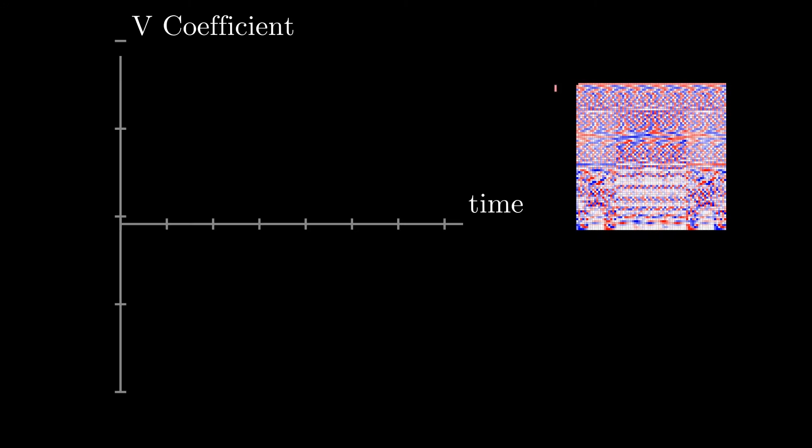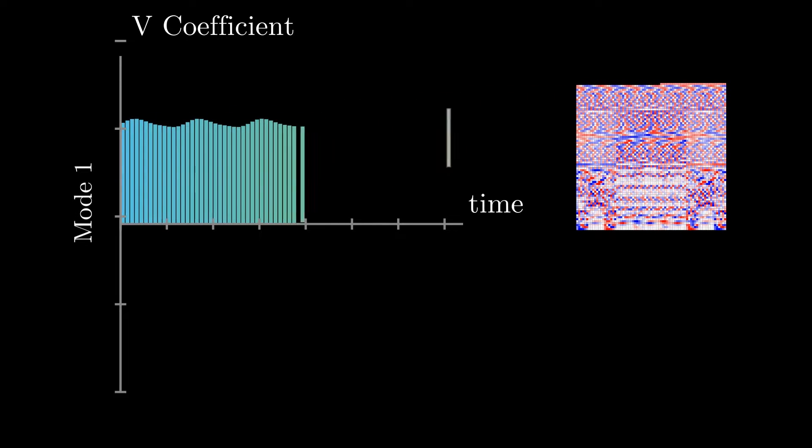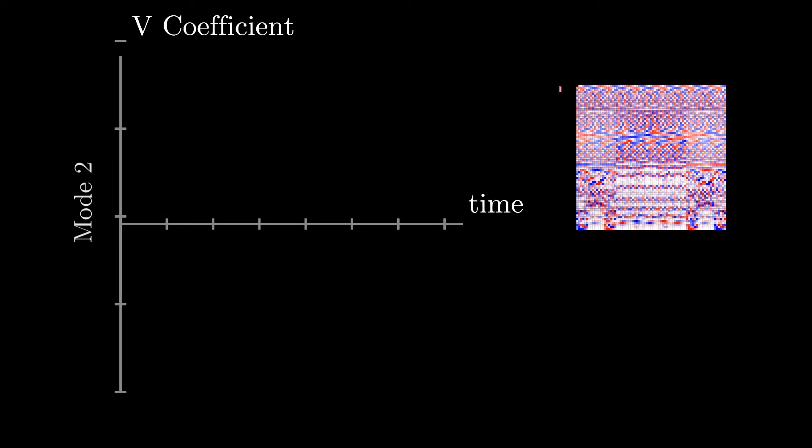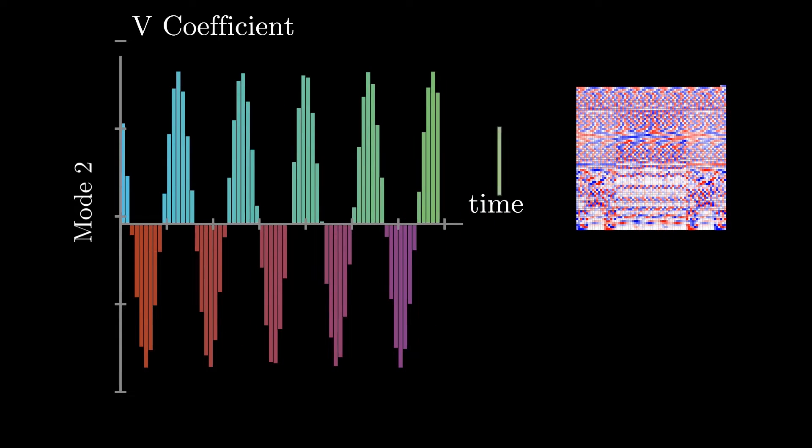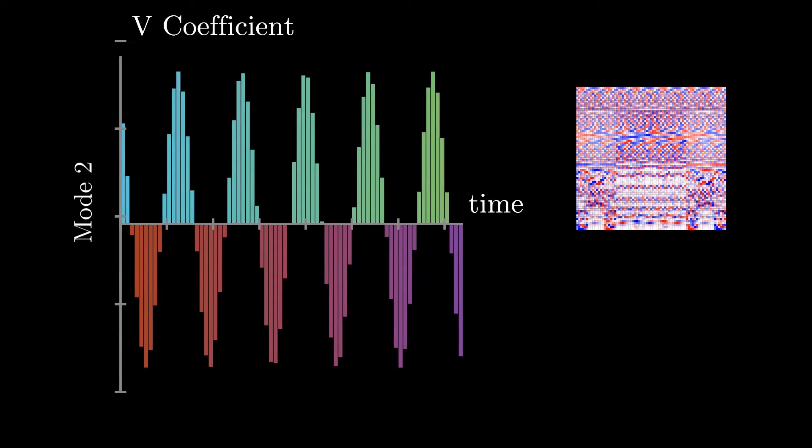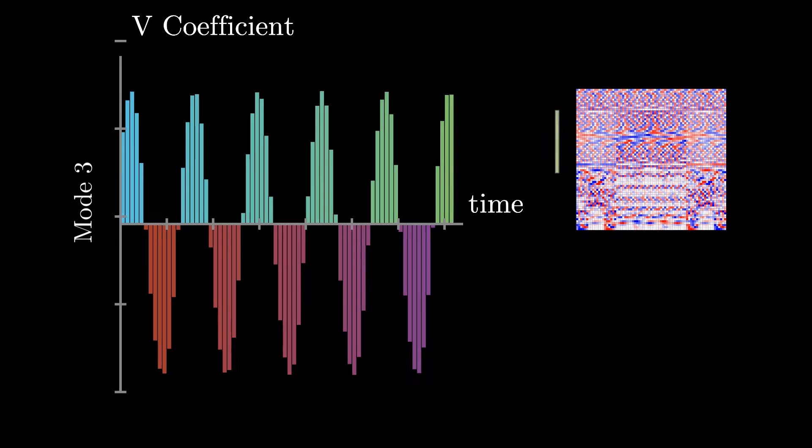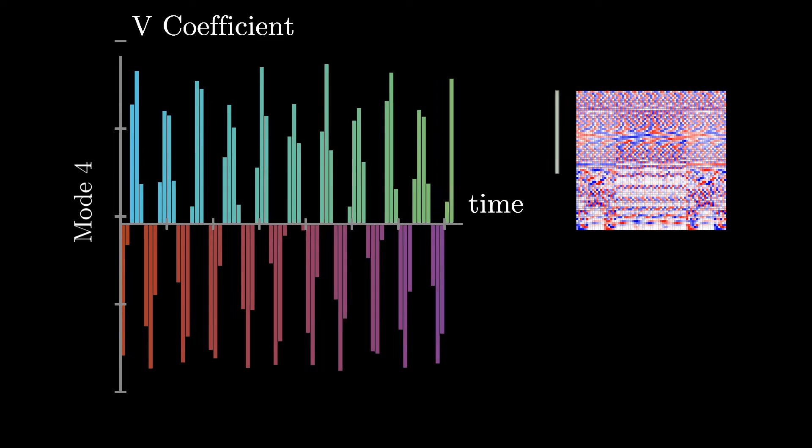And finally, the V matrix contains time coefficients for each mode if the underlying data is organized as snapshots in time. Different than the sigma matrix, this matrix has non-zero entries everywhere, showing how the corresponding mode oscillates in time in order to reconstruct the original data.